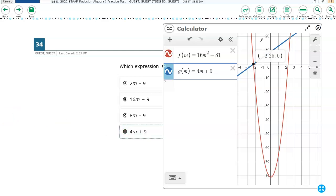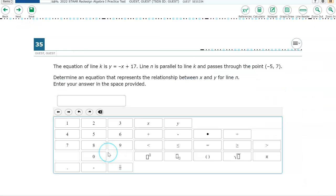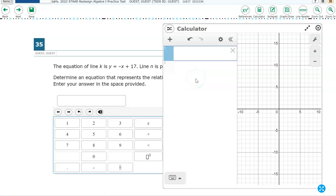The next item we're looking at is item number 35. Here's an equation K of line K. It's Y equals negative X plus 17. A line parallel to K passes through this point. Determine an equation that represents the relationship between X and Y for line N. So I'm going to create, first of all, a graph for the line Y is equal to negative X plus 17. Let's just do that.